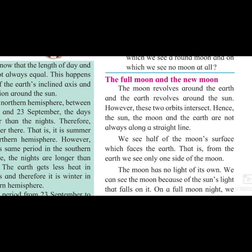The orbits of the moon and earth intersect each other. What is the meaning of orbit? The path along which the planets revolve around the sun is called the orbit — a certain path is given to them, and that path is called the orbit.